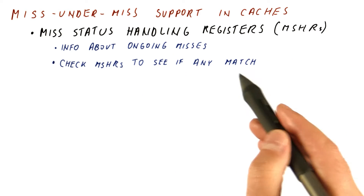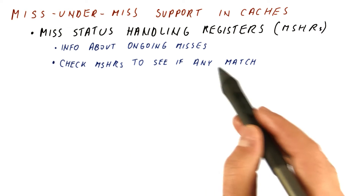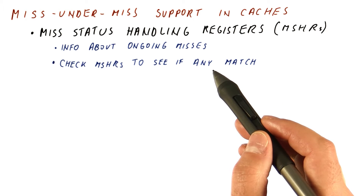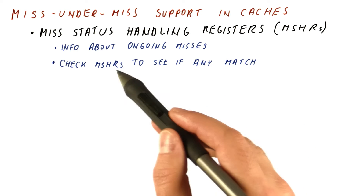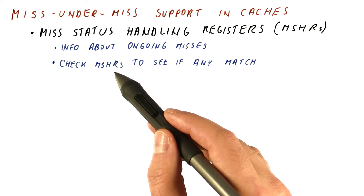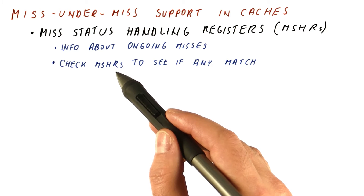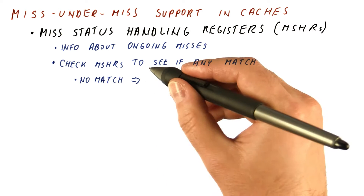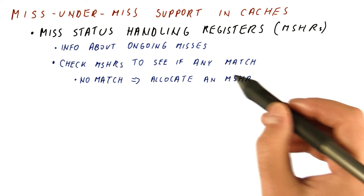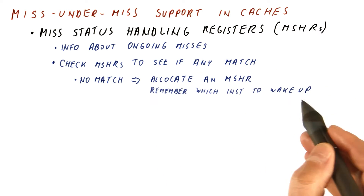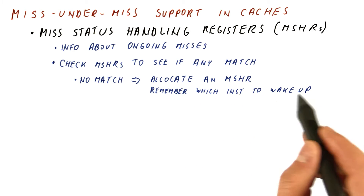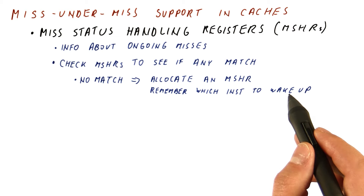When we have a miss, we have to check the MSHRs to see if there is any match. Basically, if we have a miss, we want to know whether it's a new miss or something that we didn't find in the cache but has already been ordered from memory due to a previous miss. If it's not a match, that means it's a miss to a different block, so we allocate a new MSHR. In the MSHR, we remember which instruction in the processor to wake up when the data comes back.